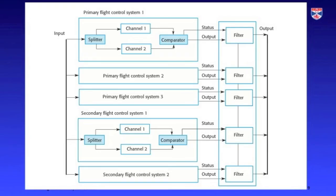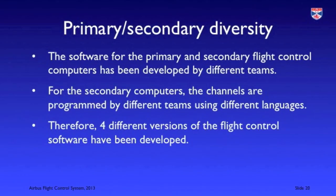The Airbus takes this multi-channel self-monitoring architecture and combines it into an architecture where there is fallback from the primary computers to backup primary computers and finally to the secondary flight control computers — all of which are multi-channel architectures, with many different computations being carried out simultaneously. As well as the software in each channel being different, the primary and secondary computers also run different software, resulting in four versions of the software developed for the Airbus: one for each channel in the primary systems and one for each channel in the secondary systems. This allows the system to cope with common errors across the primary and secondary systems.